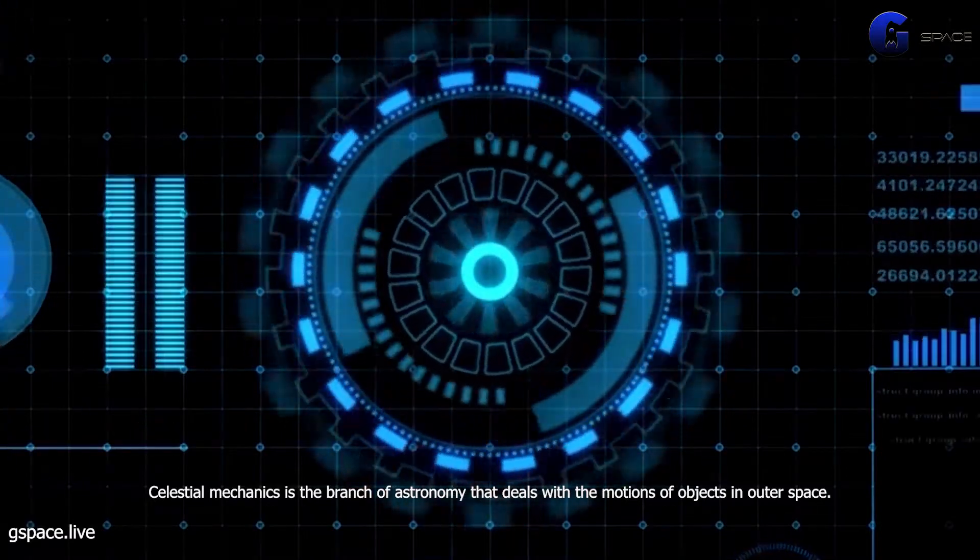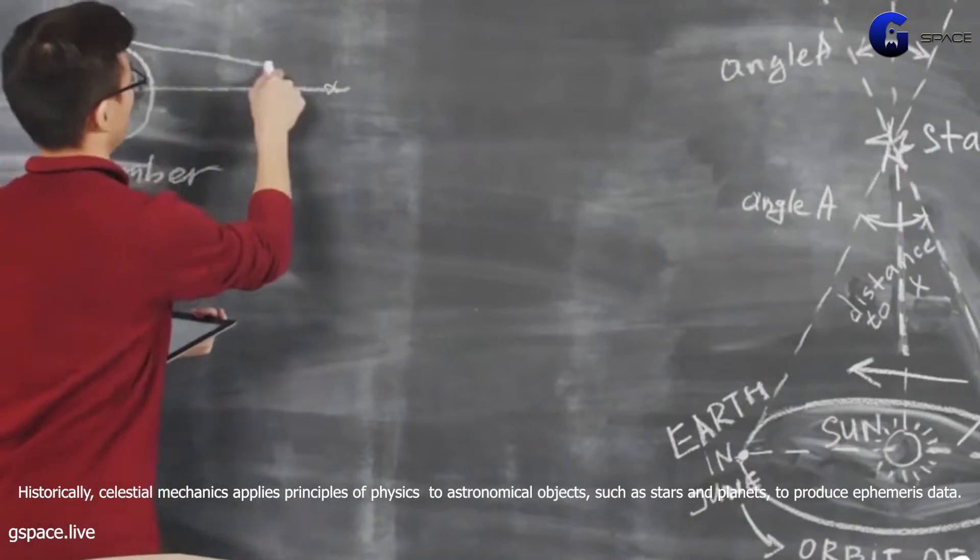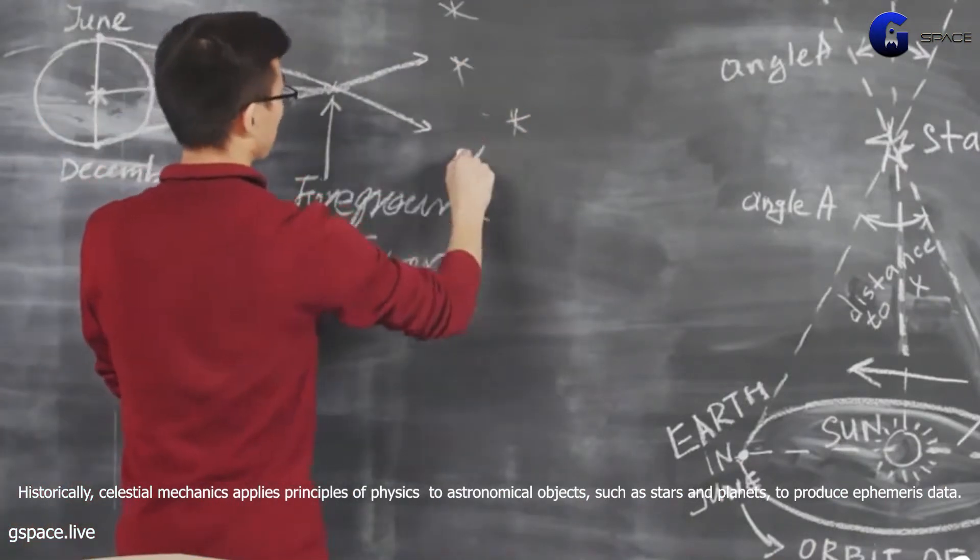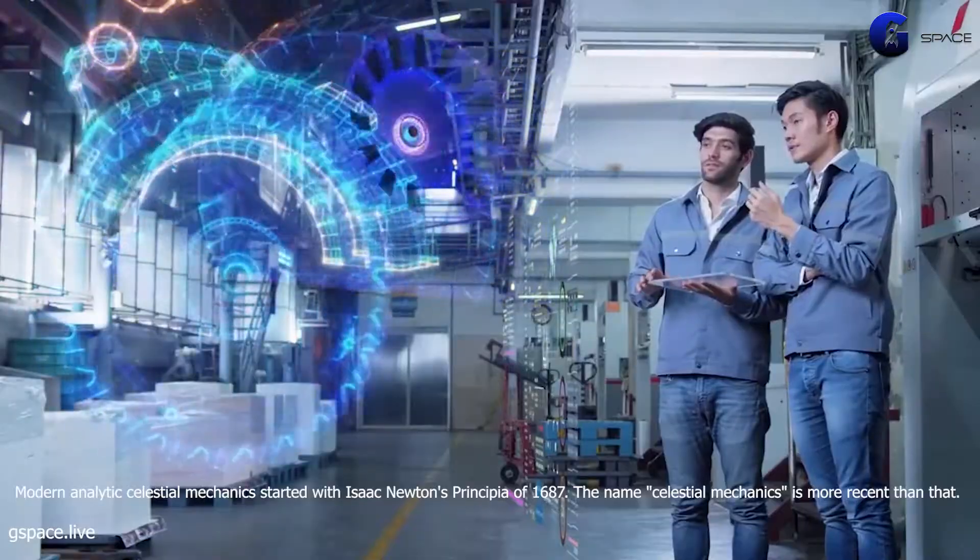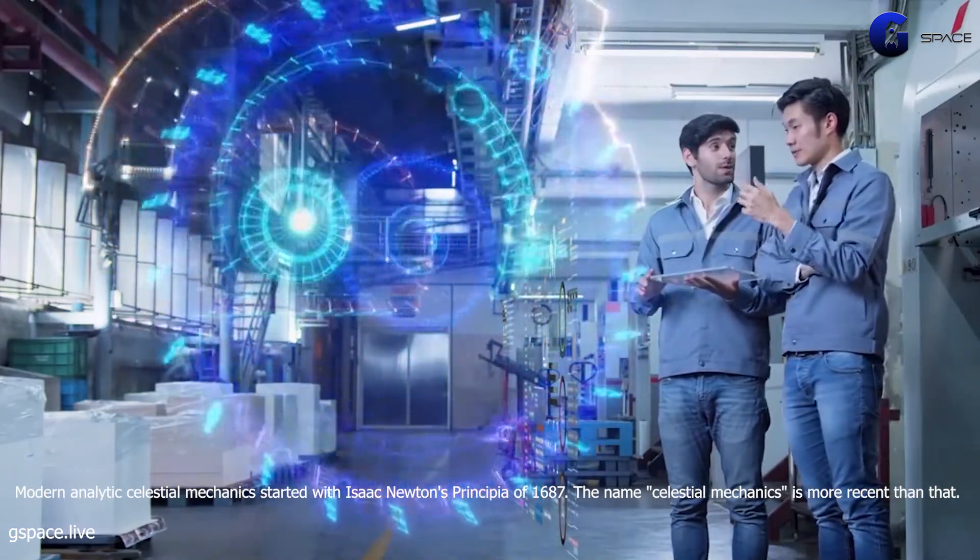Celestial mechanics is the branch of astronomy that deals with the motions of objects in outer space. Historically, celestial mechanics applies principles of physics to astronomical objects such as stars and planets to produce ephemeris data. Modern analytic celestial mechanics started with Isaac Newton's Principia of 1687.